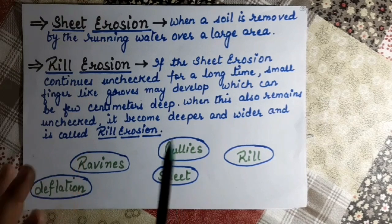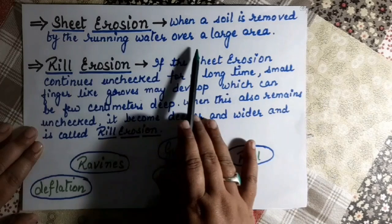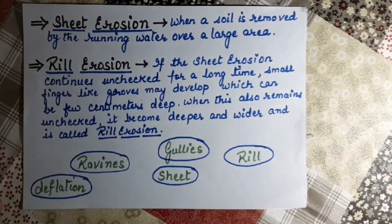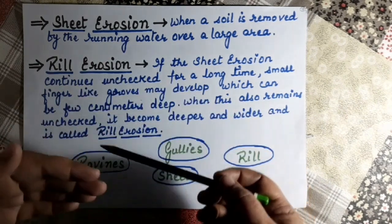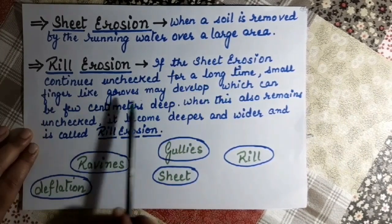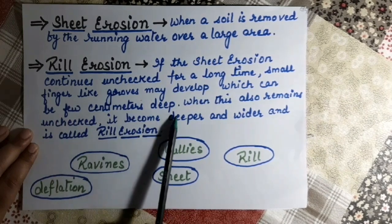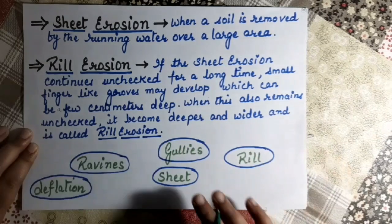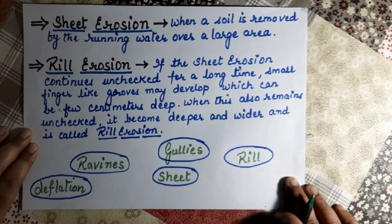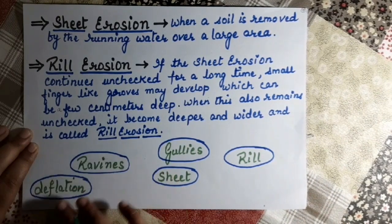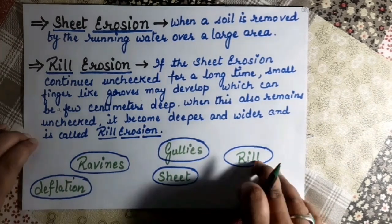Strong winds can blow away particles of soil in arid or semi-arid regions — this is called deflation. Sheet erosion is when soil is removed by running water over a large area, washing away the top sheet. If sheet erosion continues unchecked, small finger-like grooves develop a few centimeters deep; when these become deeper and wider it is called rill erosion.